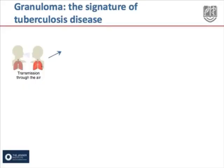Transmission occurs when a person inhales droplets and the TB bacilli reach the alveoli. MTB is phagocytosed by alveolar macrophages and the bacteria divide within the macrophages by evading the host's innate immune mechanisms.